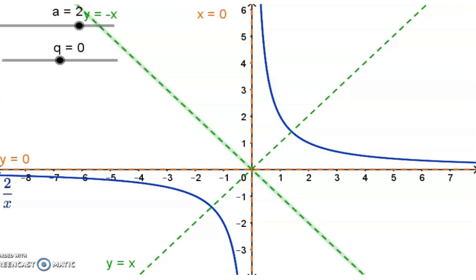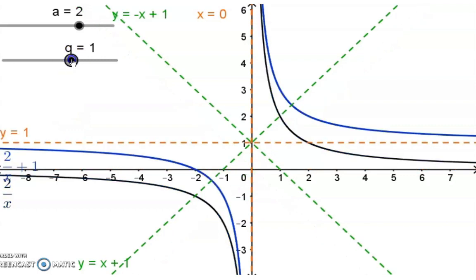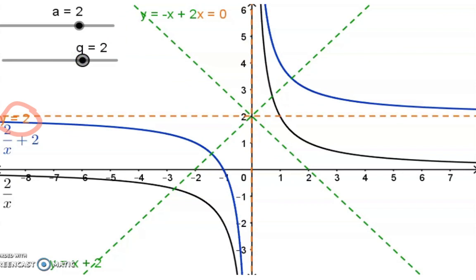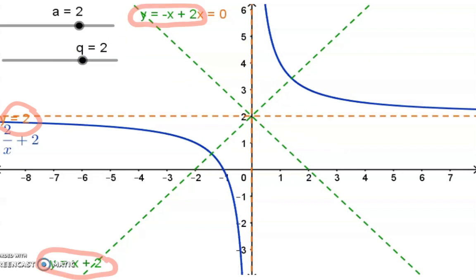These axes of symmetry and asymptotes will always move with the graph as it translates vertically or horizontally. We already know that the q-value moves the graph vertically up or down. In this case, we have a q-value of 2, and you can see that the graph, along with the horizontal asymptote and the two axes of symmetry, moved up 2 units. The vertical asymptote of x is equal to 0 stayed the same as the graph did not move left or right.